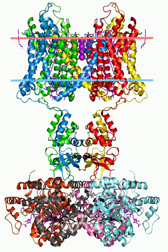Calcium channels are important for certain cell signaling cascades as well as neurotransmitter release at axon terminals. A variety of different types of calcium ion channels are found in excitable cells. As with sodium ion channels, calcium ion channels have been isolated and cloned by chromatographic purification techniques. It is notable that calcium channels can interact with intracellular proteins and play a strong role in signaling, especially in locations such as the sarcoplasmic reticulum of muscle cells.